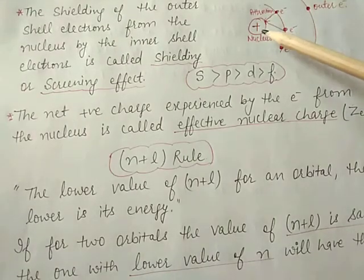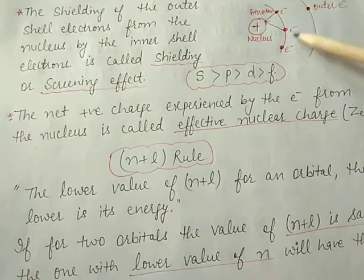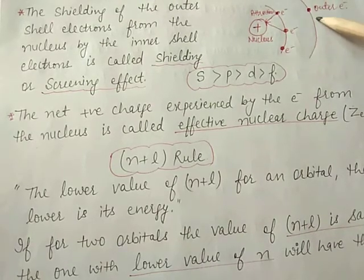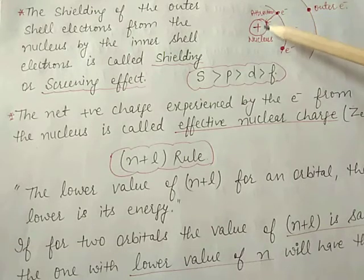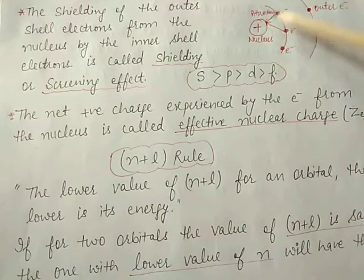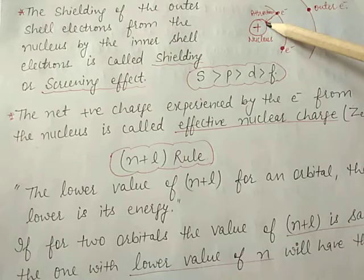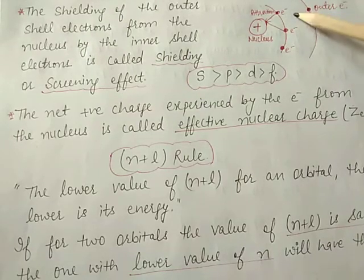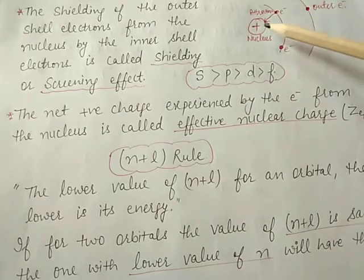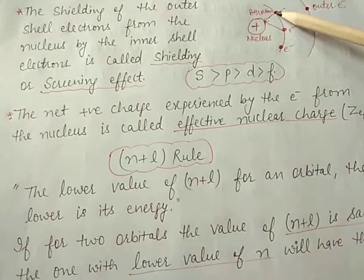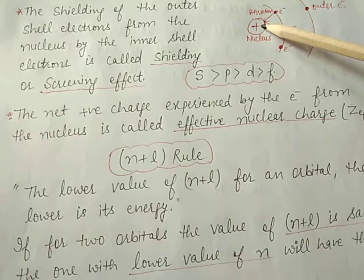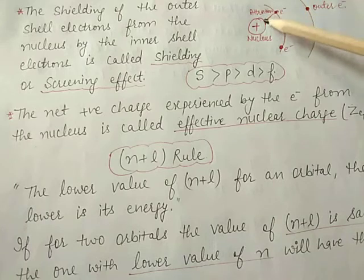The nucleus has a positive charge, and the electrons surround it. These are the inner electrons and these are the outer electrons. The positive charge nucleus attracts the electrons towards itself, so attraction takes place between the nucleus and electrons, while repulsion takes place between electrons and electrons.